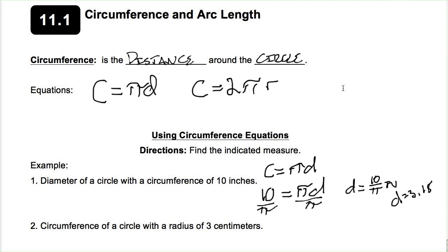For the second one, we have to find the circumference of a circle with a radius of 3 centimeters. I'm going to use C = 2πr. My radius is 3, so 2 times 3 is 6, giving 6π centimeters. If asked to round to the nearest hundredth, 6 times pi in your calculator gets 18.85 centimeters.